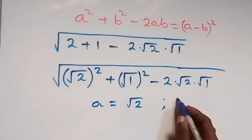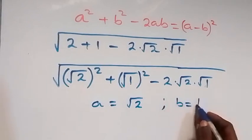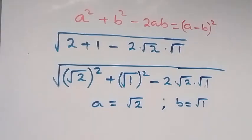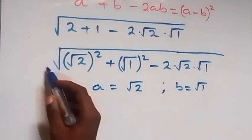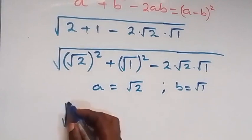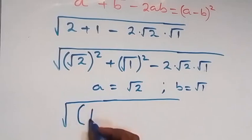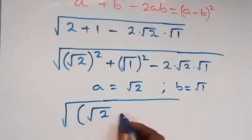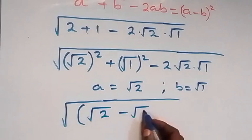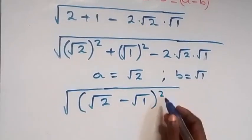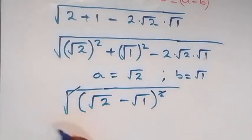That is we can rewrite what we have here and this becomes square root of, into bracket root 2 minus root 1, or square. And from here square, we cancel the square roots.